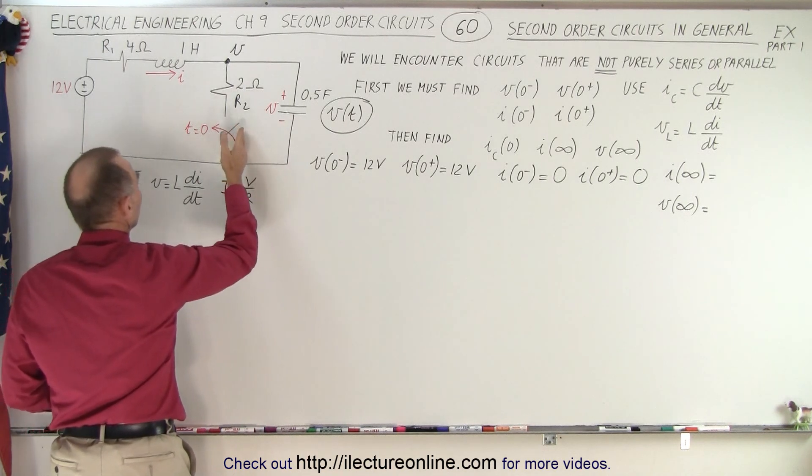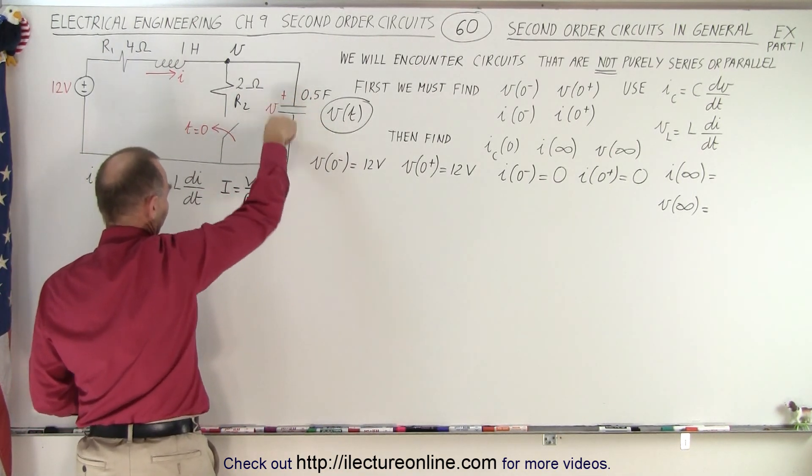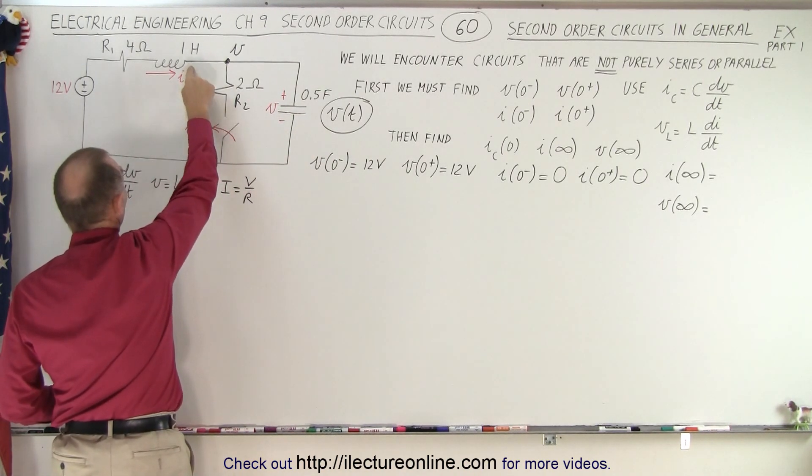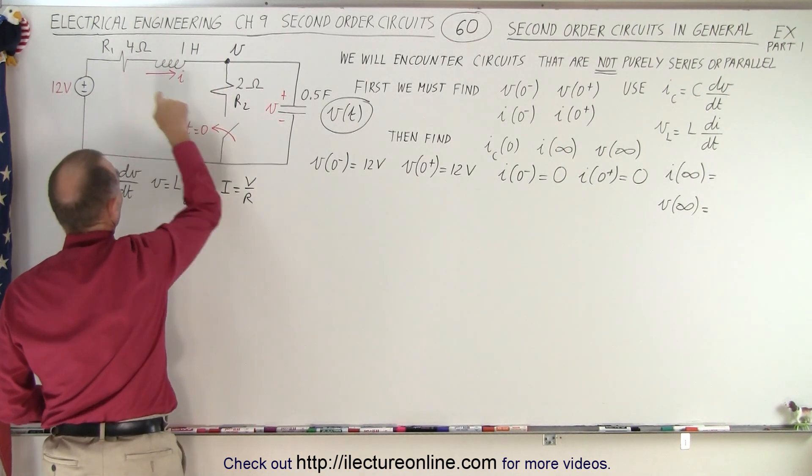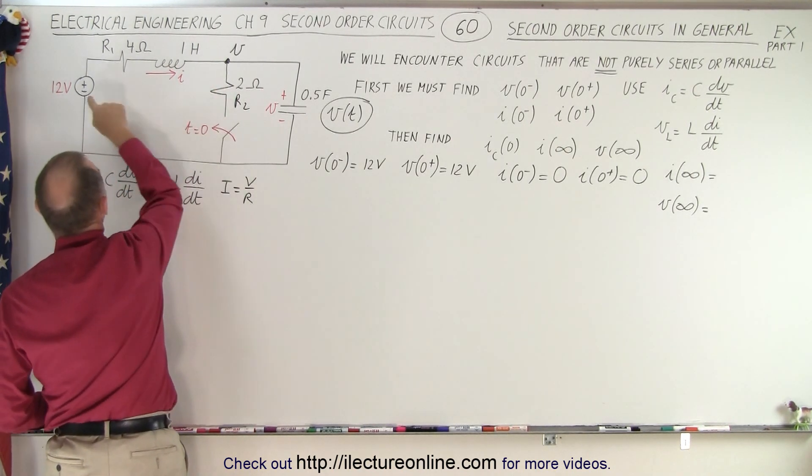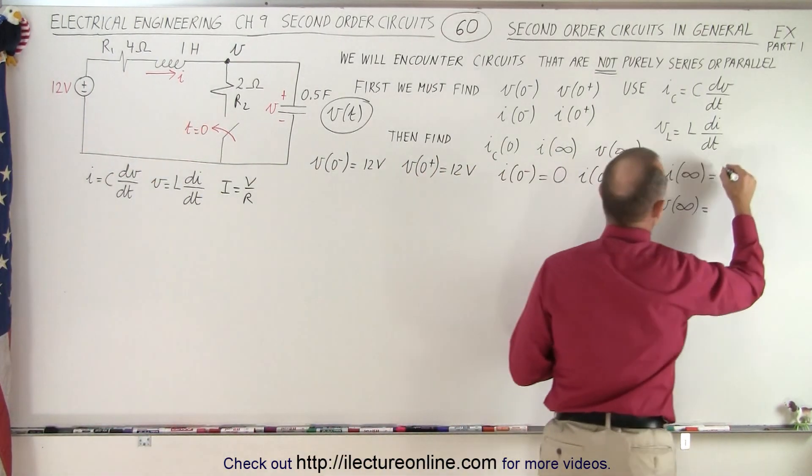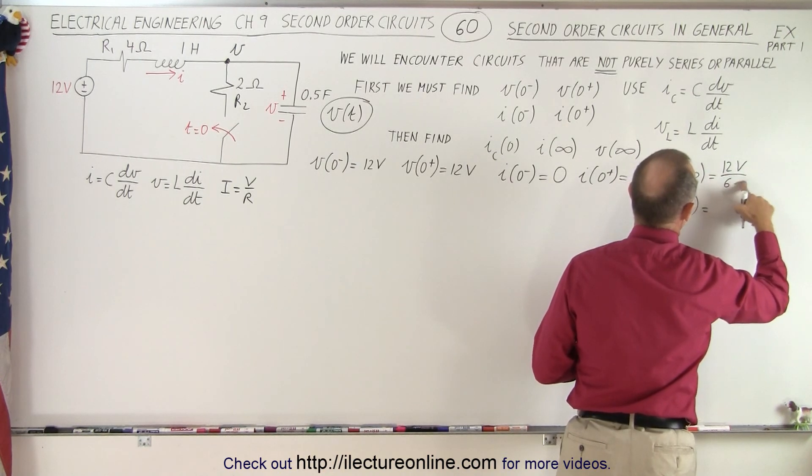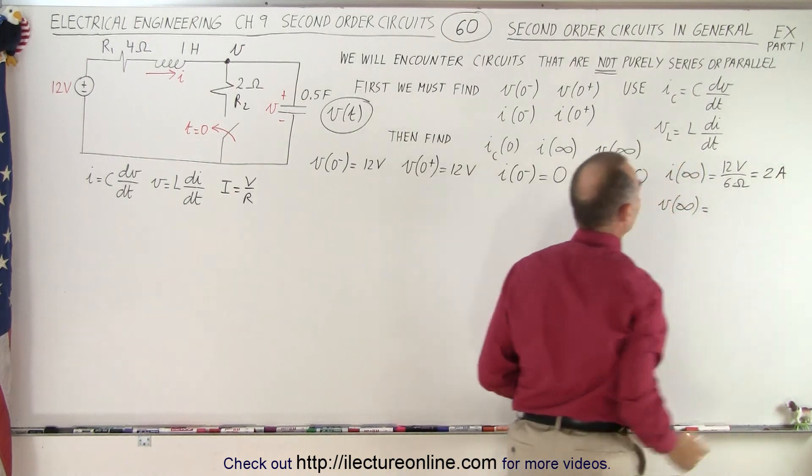What about the steady state current through the circuit? Once the switch closes, something will happen to the capacitor, but eventually no current will be flowing through the capacitor. Everything will be flowing through the circuit. There is no opposition to the current flow from the inductor, so we simply have voltage divided by total resistance. And so 12 volts divided by 6 ohms will be the final current, so 12 volts divided by 6 ohms, that would be equal to 2 amps will be the steady state current.